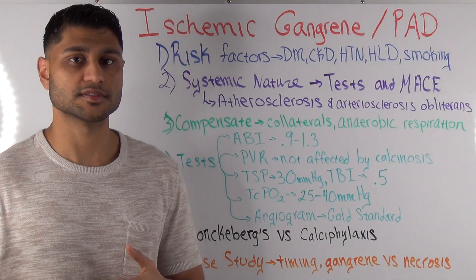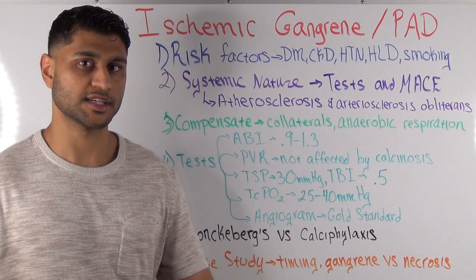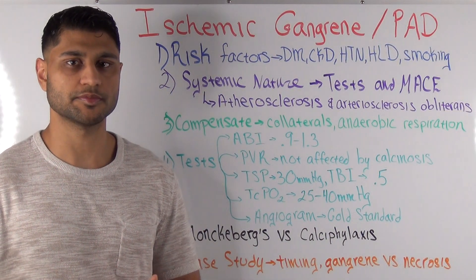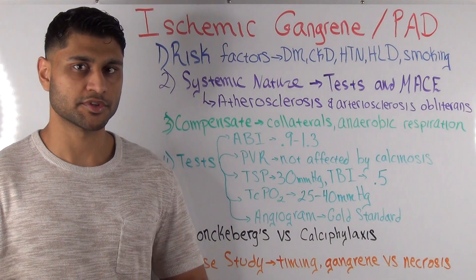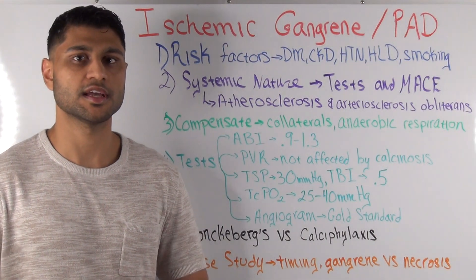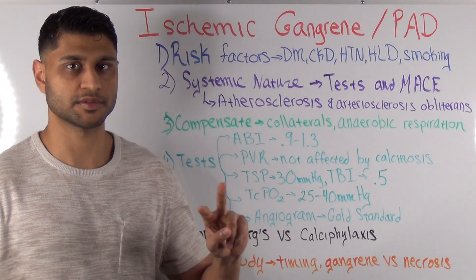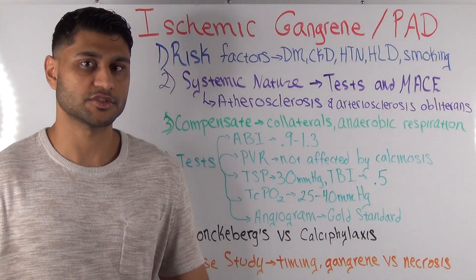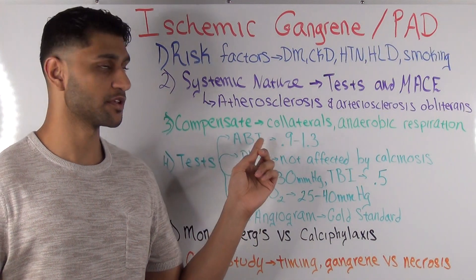You also need to know how to interpret a low ABI result. They might give you results such as 0.5, 0.6, or 0.7, and ask you to interpret them. When taking ABI, blood pressure cuffs are placed at different parts of the leg and thigh. What you're looking for is a drop of 20 millimeters of mercury between two adjacent cuffs or readings. So if you see a 120 and then an 80 — a drop of more than 20 — that's likely where the lesion is occurring.